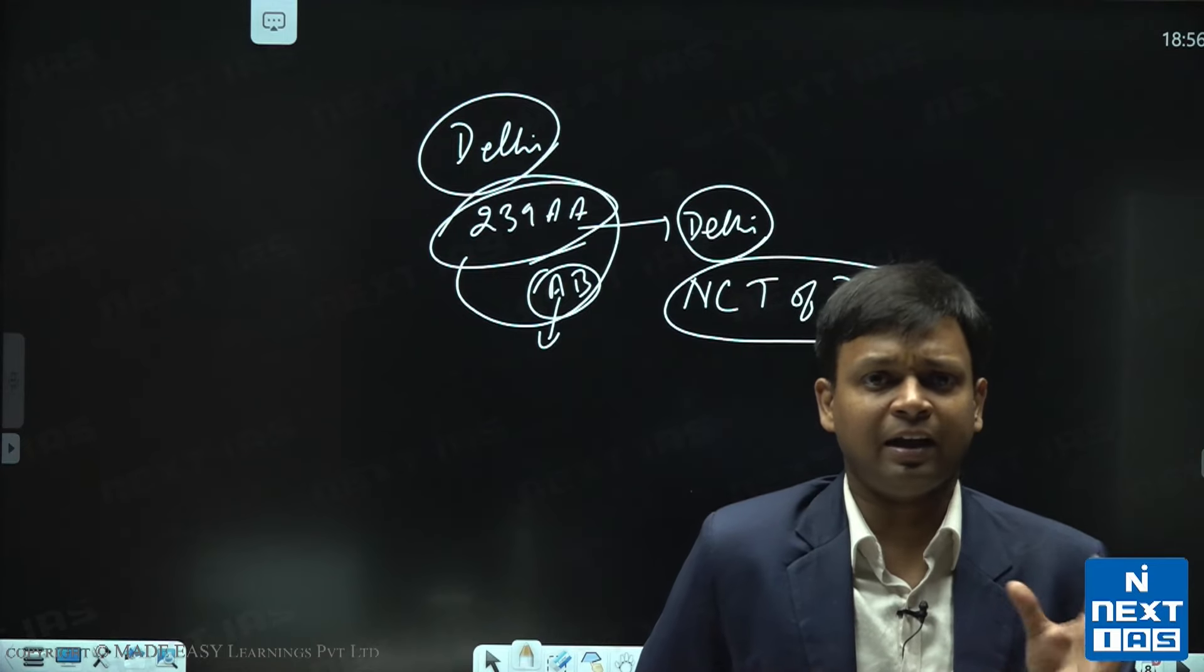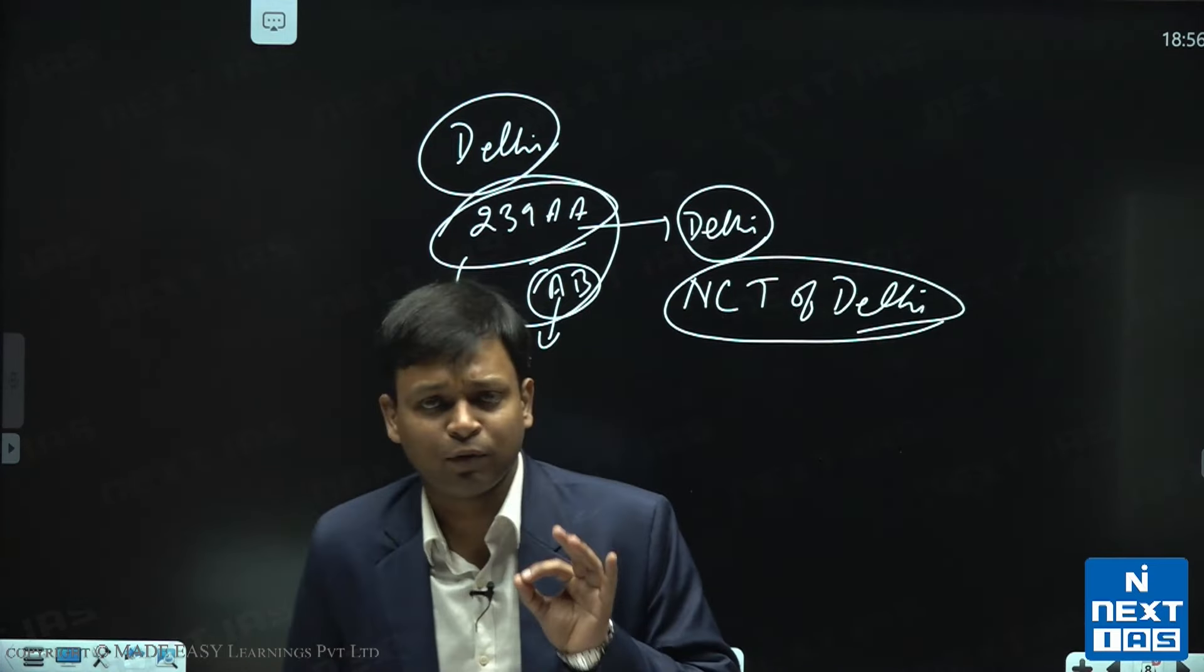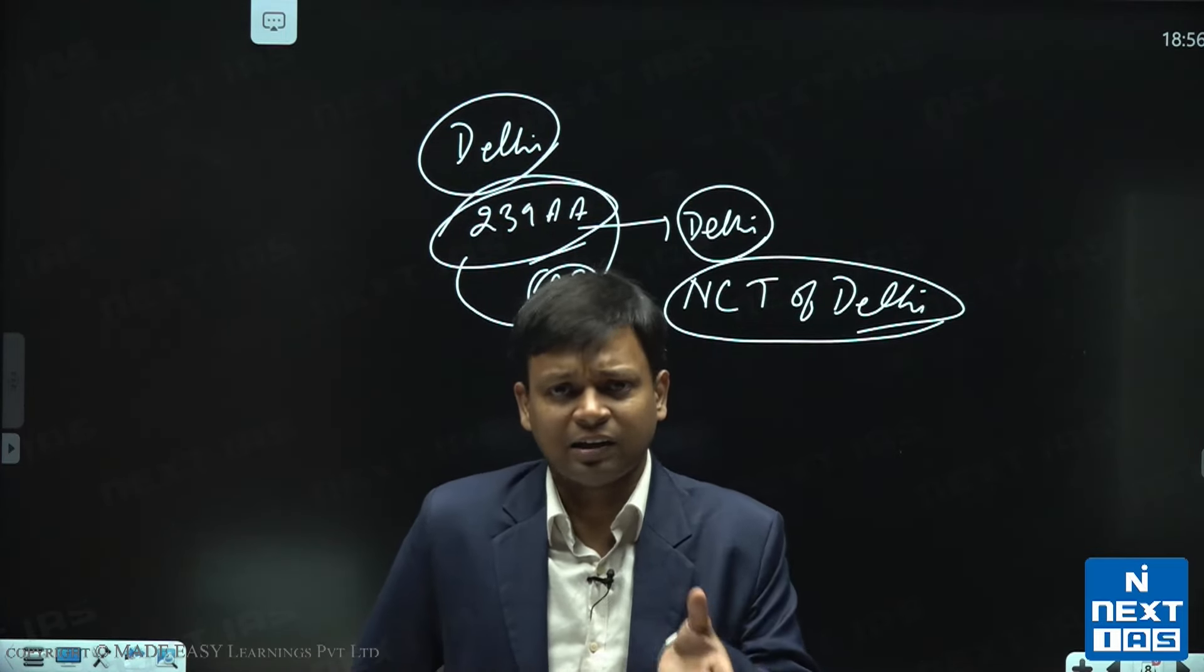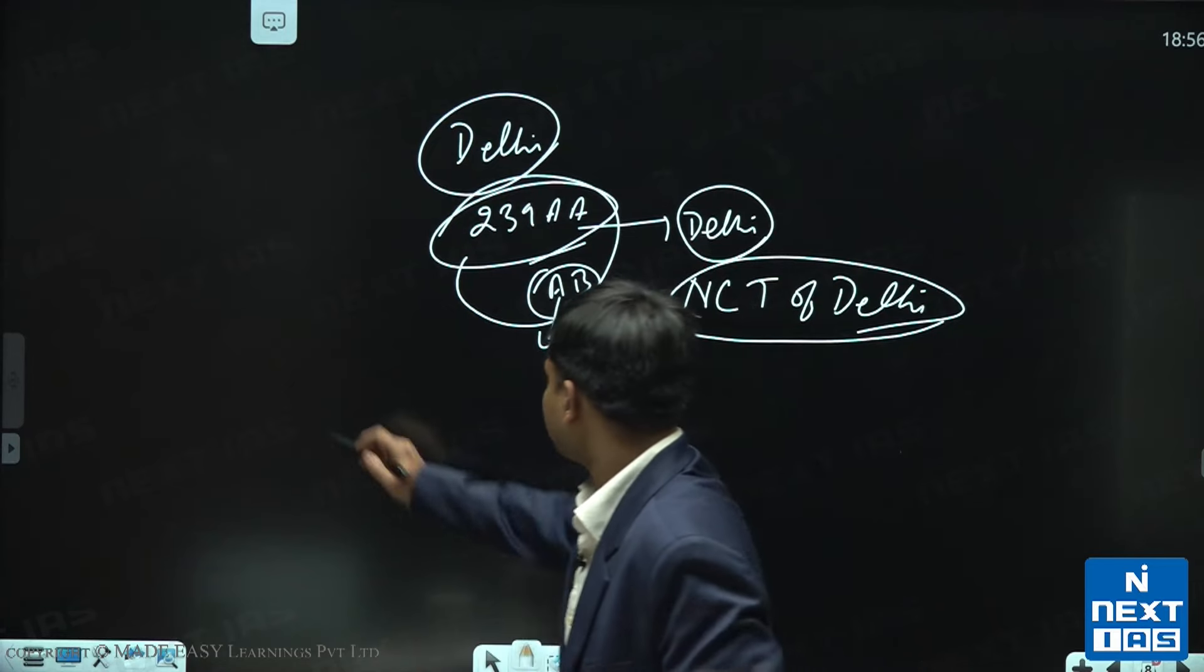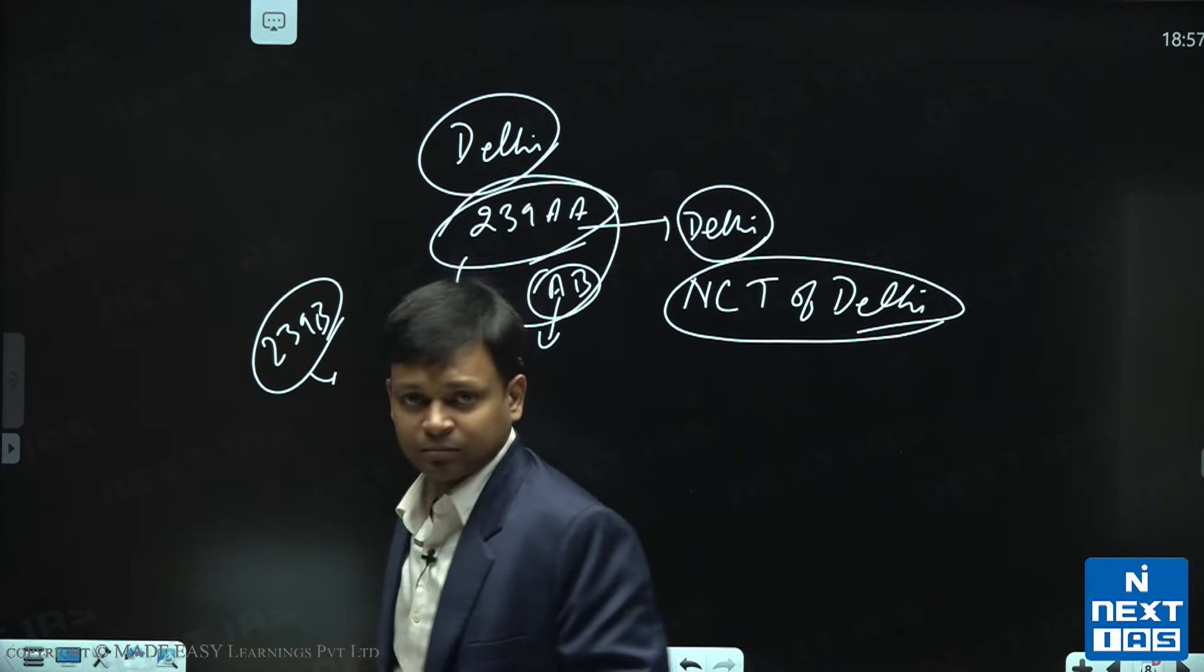Article 239 AA and AB, these are two special provisions which are explicitly there for Delhi. इसके अलावा, एक और article है, जो UTs के government से related है, वो Article 239 B है. उसके बारे में आगे बात करेंगे.